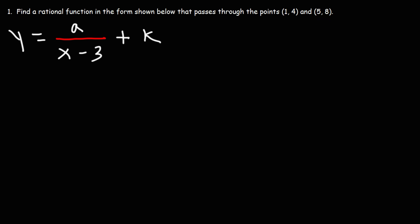Now let's go ahead and finish this problem. In order to solve for two variables, a and k, we need two equations. We're going to get the first equation by plugging in the first point. So we're going to replace x with 1 and y with 4. So we're going to have 4 equals a over 1 minus 3 plus k. Now let's simplify this expression. 1 minus 3 is negative 2.